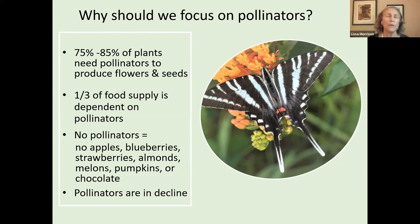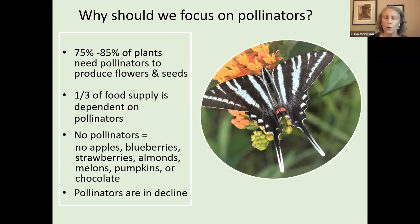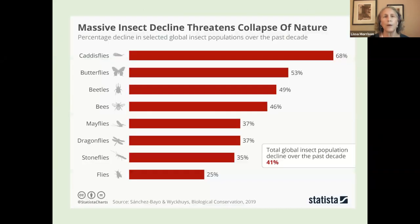That would affect our food supply — about one third of the food we eat is dependent on pollinators. There are so many things we would be missing without them. Pollinators are in decline, so it's really important for us to help create healthy ecosystems, even in our urban settings and backyards, to reverse this trend.